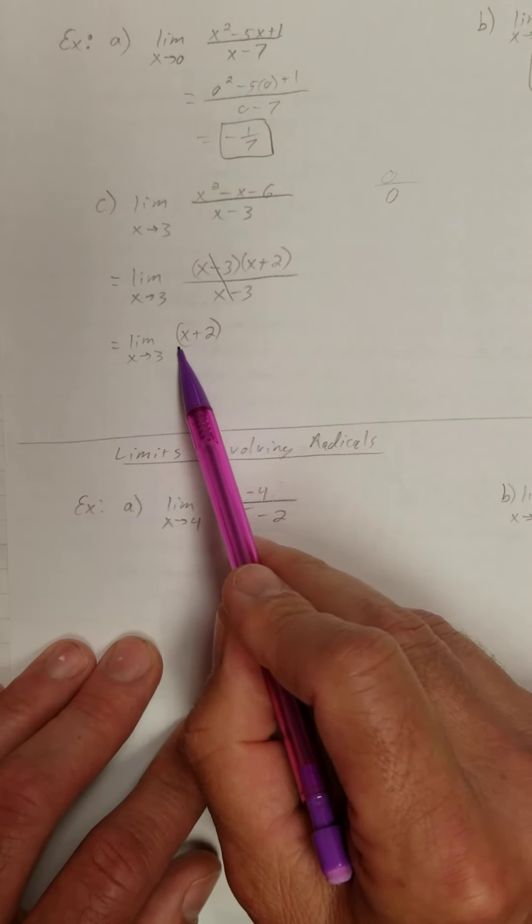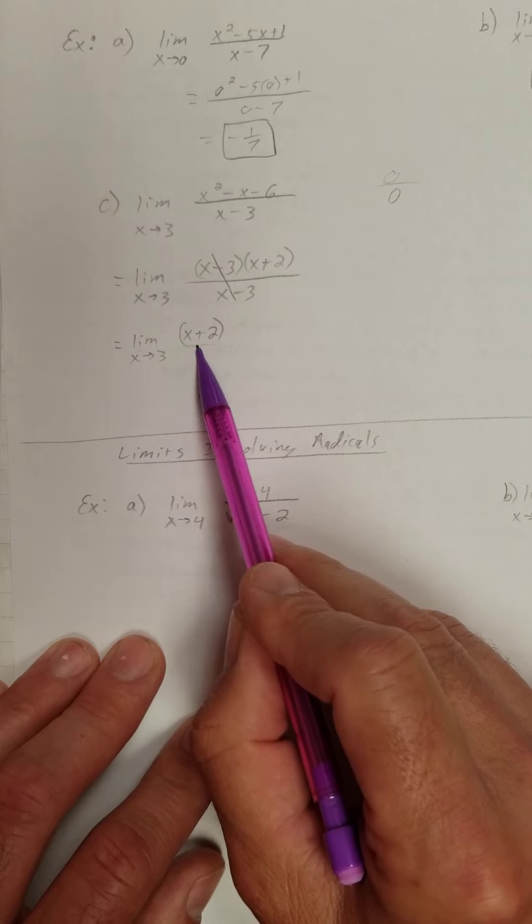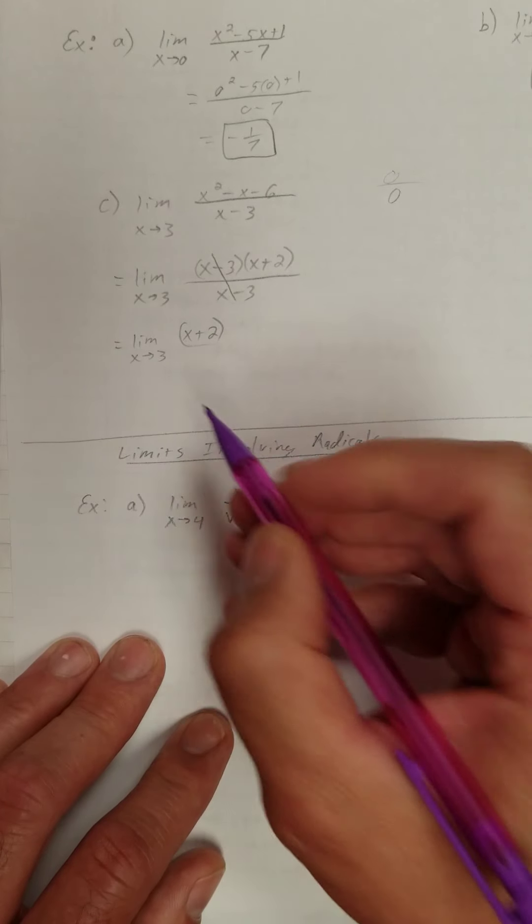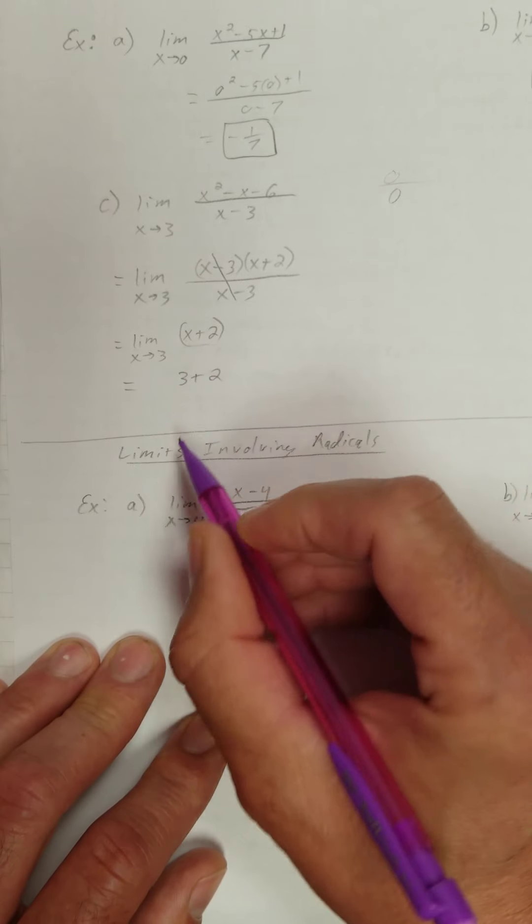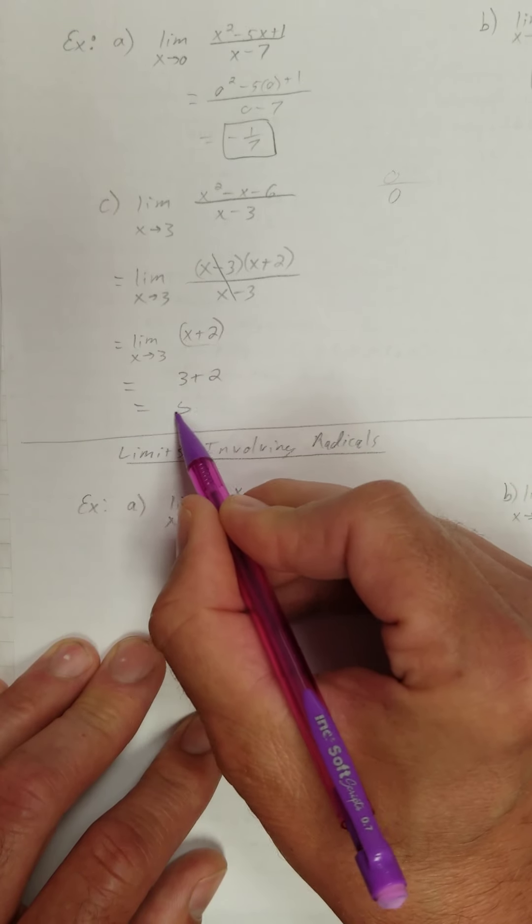So I'm going to say this is equal to the limit as x approaches 3 of x plus 2. Well, what I have left here is just a polynomial. If I have a polynomial, remember we can sub in that value. So we can say that's 3 plus 2 and lose the limit at this point. And that's 5.